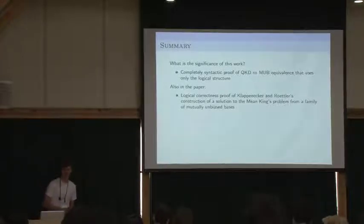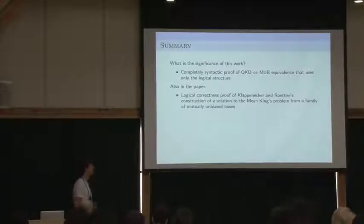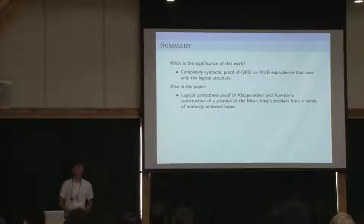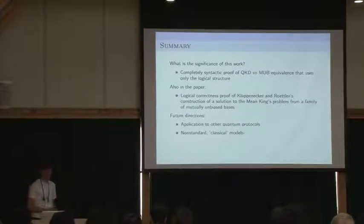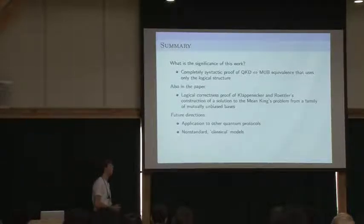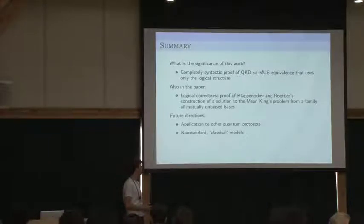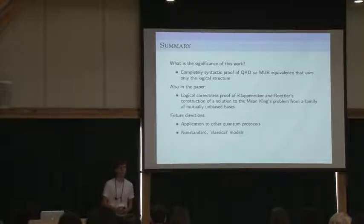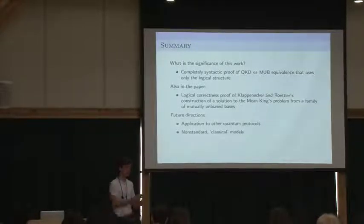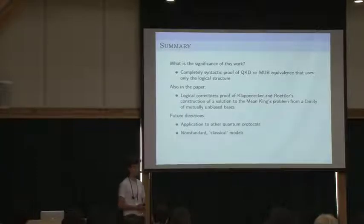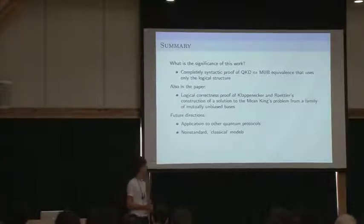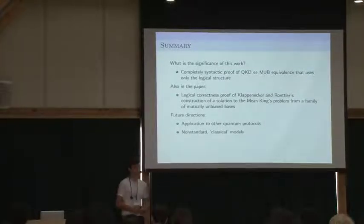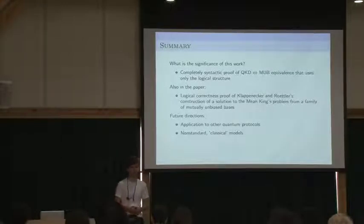Also, as mentioned in the paper, we know that other protocols work as well. We decided to stick with quantum key distribution. Future directions include applications to other quantum protocols and non-standard classical models. For instance, you could define two categories and in some sense capture classical computation, so generally groupoid actions in descent of natural numbers, and then interpret the diagrams in that category and then possibly get insight into the classical world as well.